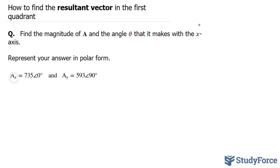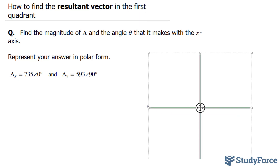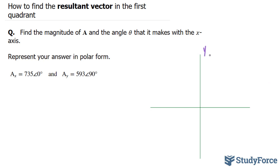The clues that they give us are a sub x and a sub y — these are the components for this vector. So we'll start off by creating a Cartesian plane and label the y and x-axis. We are told that the x component of this vector has a magnitude of 735 at an angle of 0, represented by a purple vector — we'll call this a sub x. We're also told that a sub y has a magnitude of 593 going directly up at 90 degrees, shown in orange.